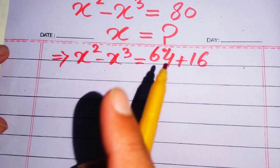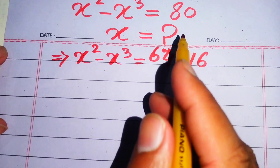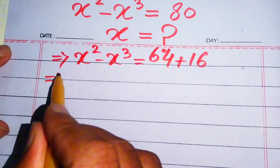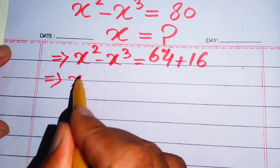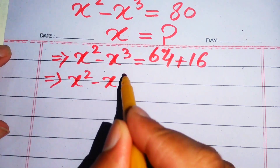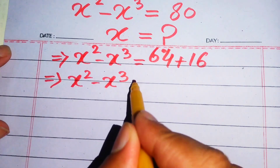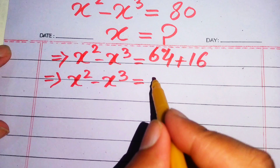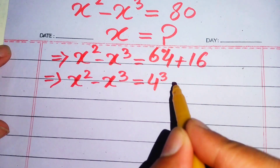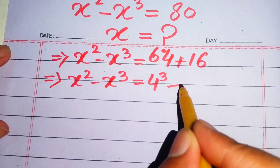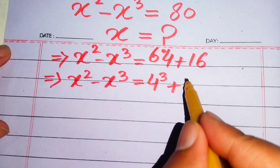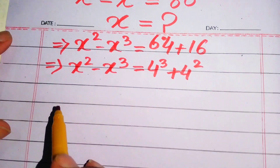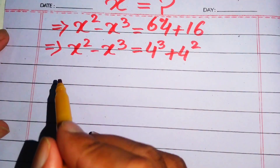We write x squared minus x cubed equals 80, and we rewrite 80 as 64 plus 16. We know that 64 plus 16 equals 80. After that, we write 64 as 4 cubed and 16 as 4 squared.